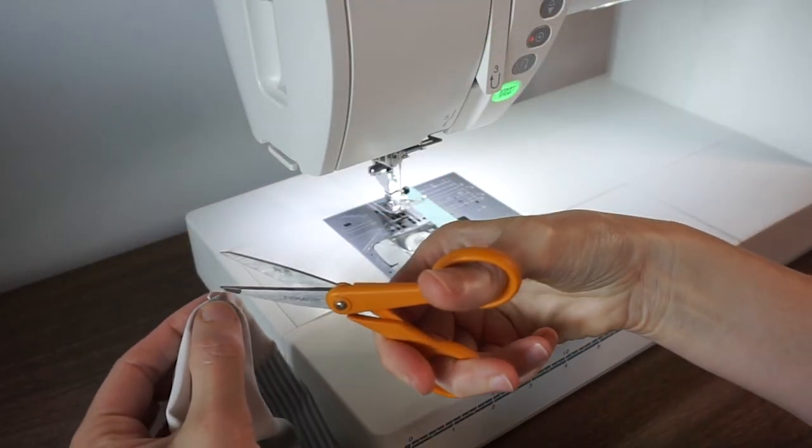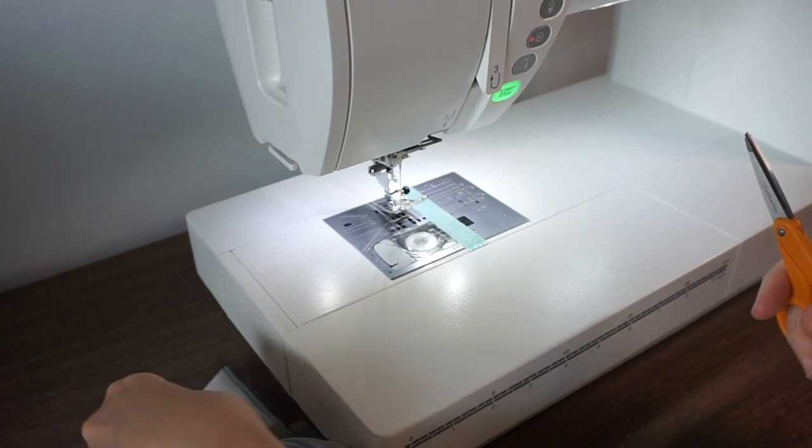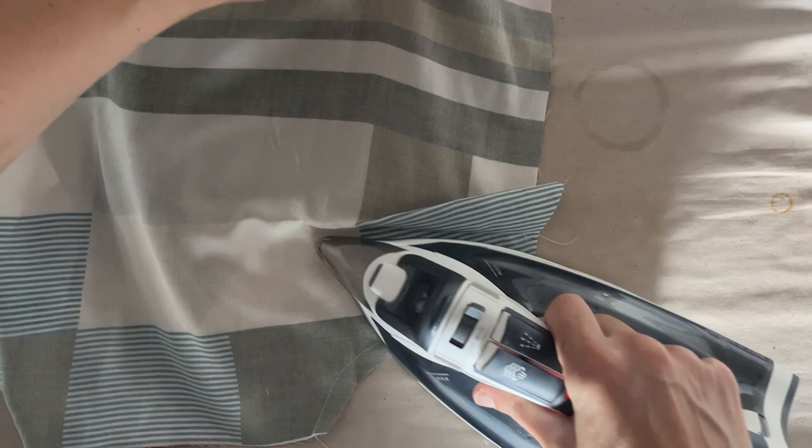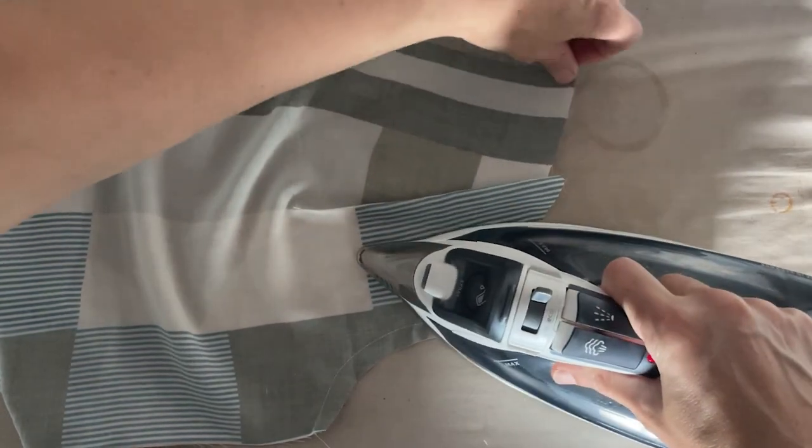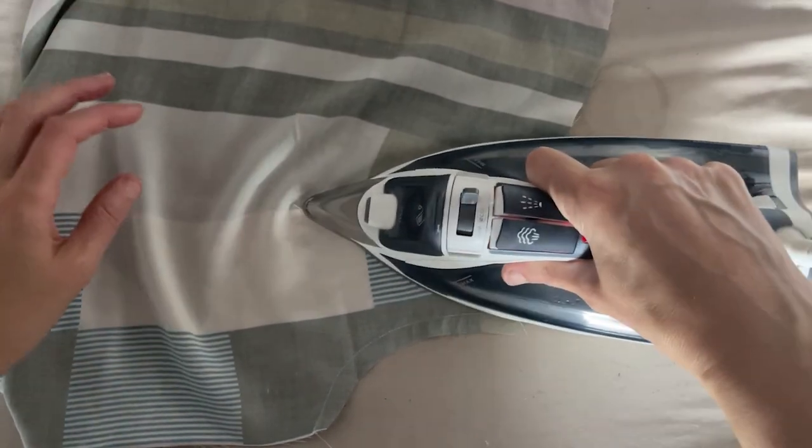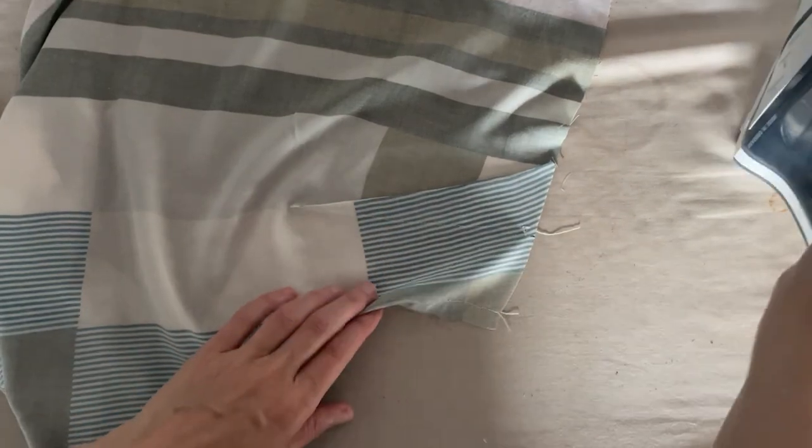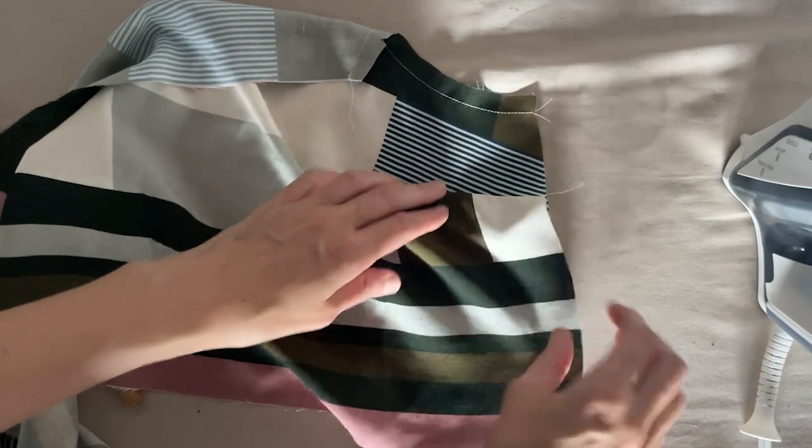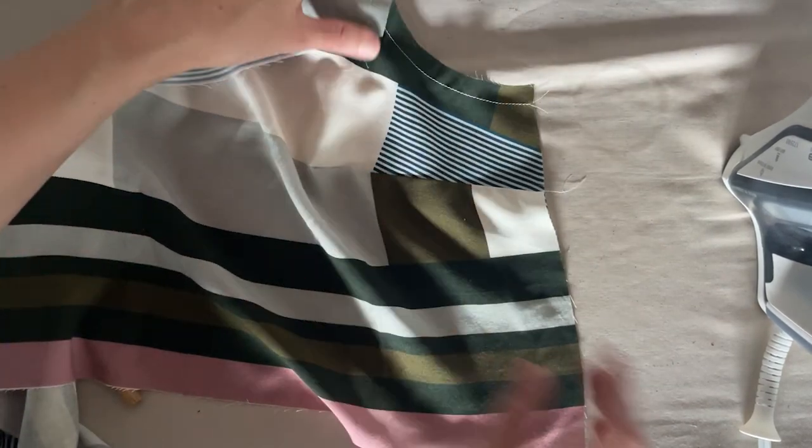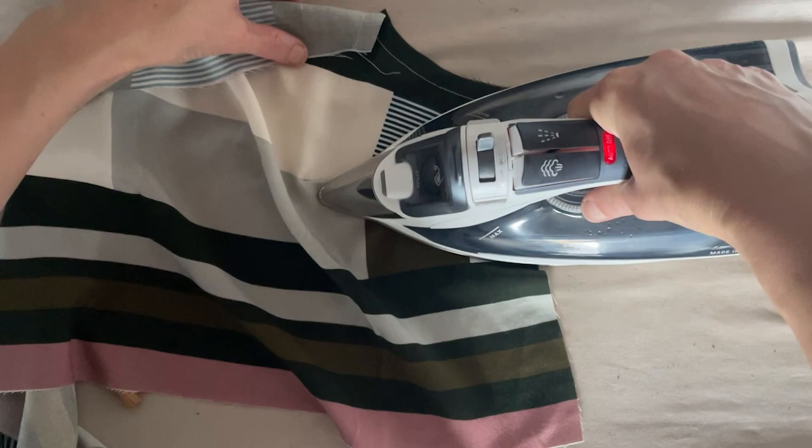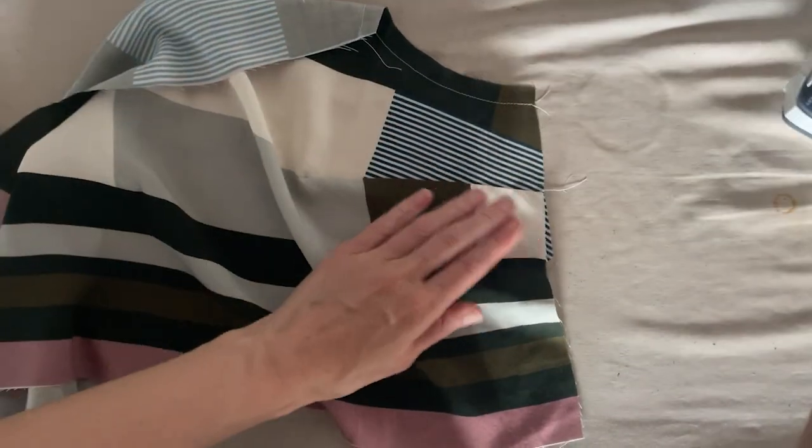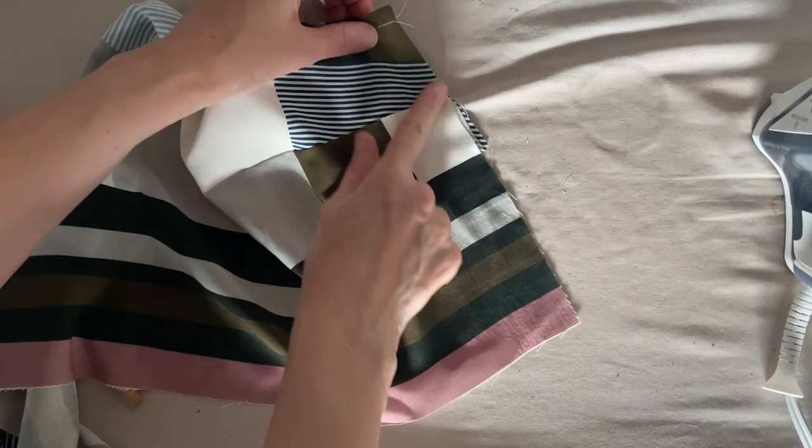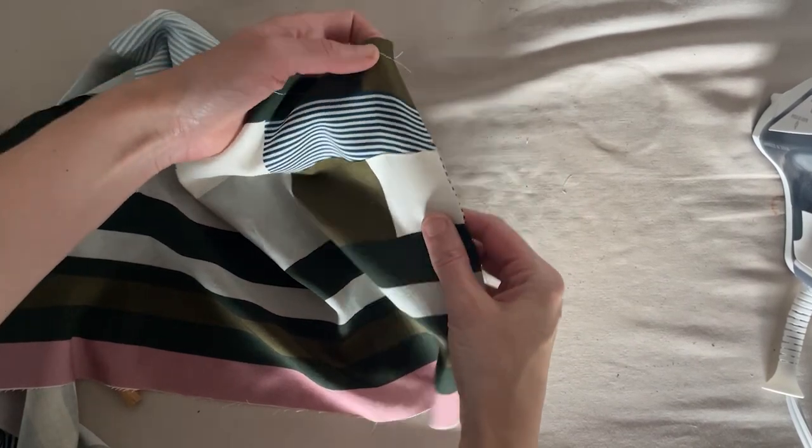And if you have your scissors handy you can go ahead and trim that thread. When pressing the darts it can be helpful to do this on a tailor's ham, especially for the larger cup sizes. If you don't have a tailor's ham you could use a rolled up towel. I like to do it on both sides just to make sure that I get it flat, and then we can finish this seam together with the dart and the side seam.